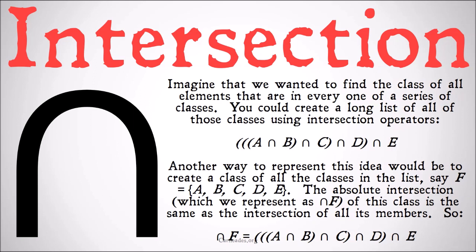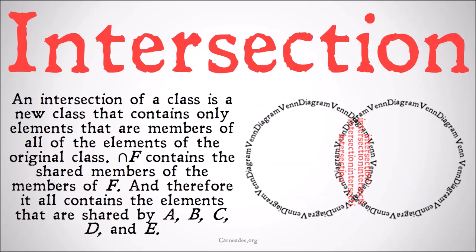This is very similar to the idea of an absolute union. If you're having trouble understanding this, take a look at the previous video on absolute unions because it's a very similar idea. An intersection of a class is a new class that contains only elements that are members of all of the elements of the original class. The intersection of F contains the shared members of the members of F, and therefore contains the elements shared by all of A, B, C, D, and E.